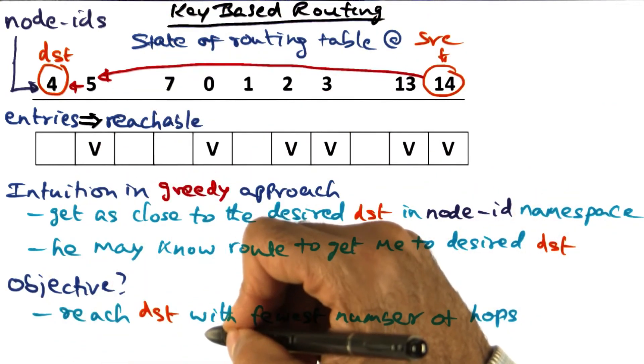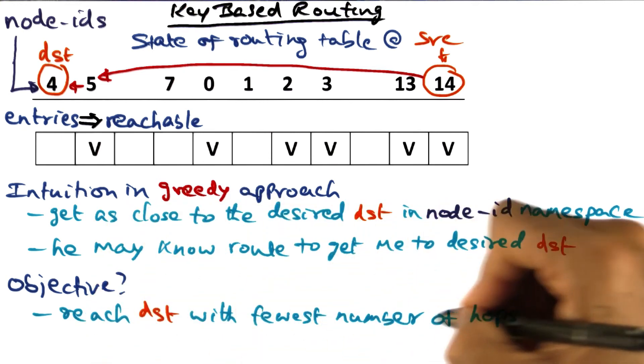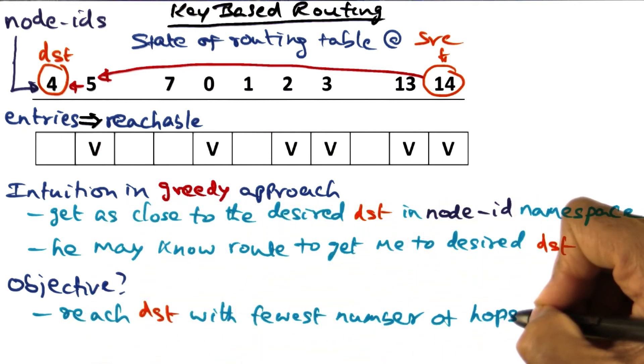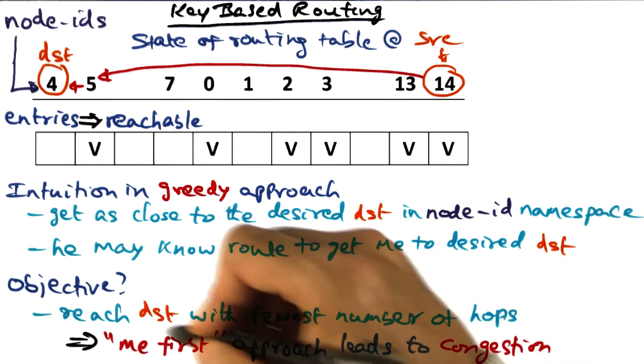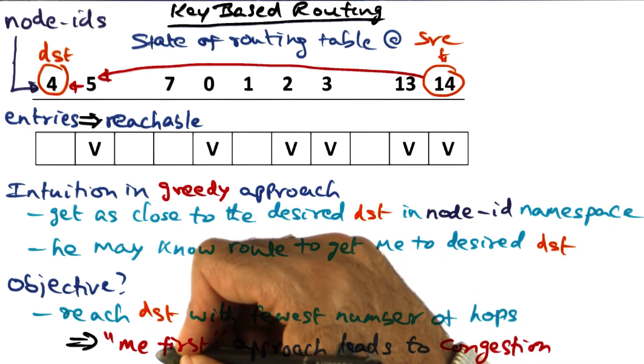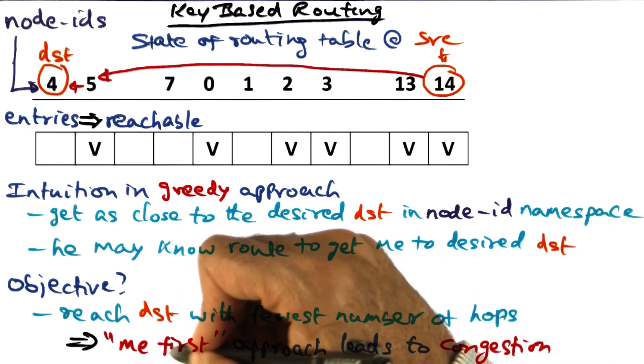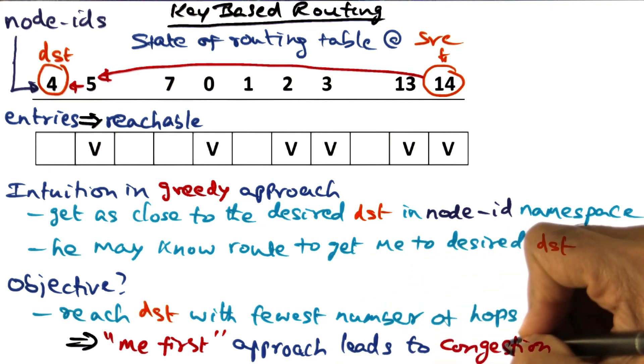The objective in the greedy approach to routing is reaching the destination with the fewest number of hops. In other words, I'm optimizing my own lookup. This 'me first' approach can lead to congestion, in particular the tree saturation I mentioned earlier.